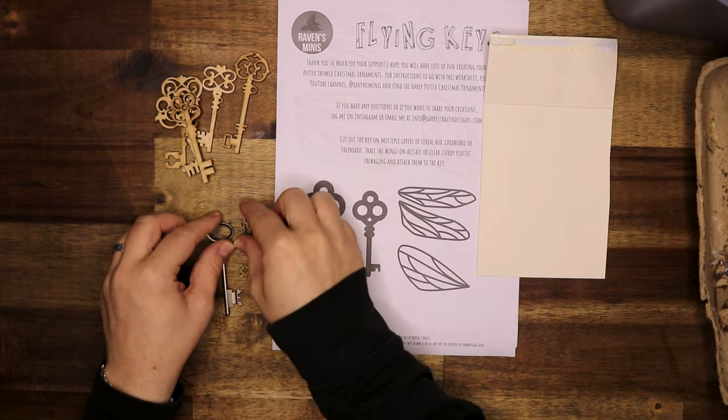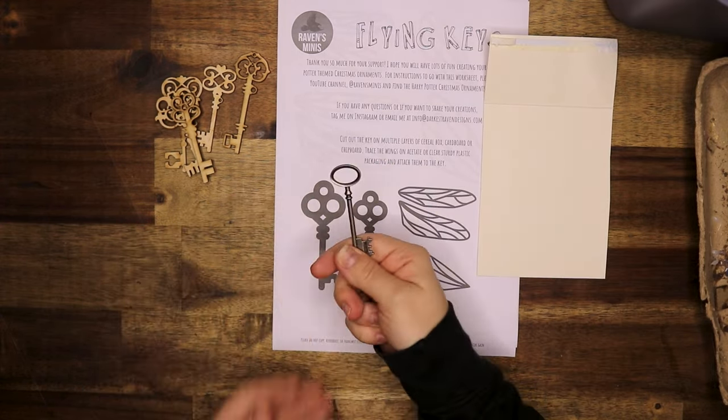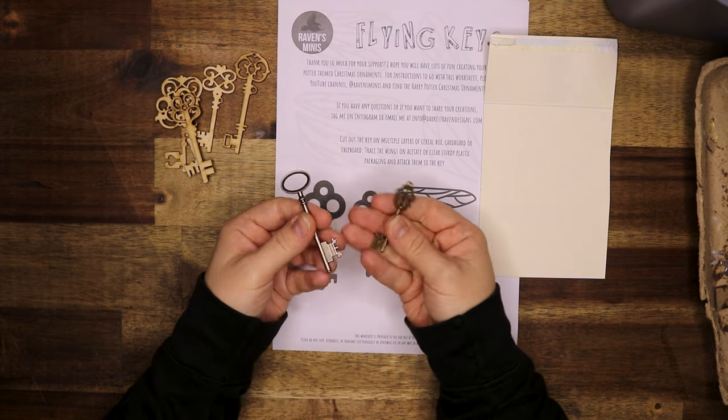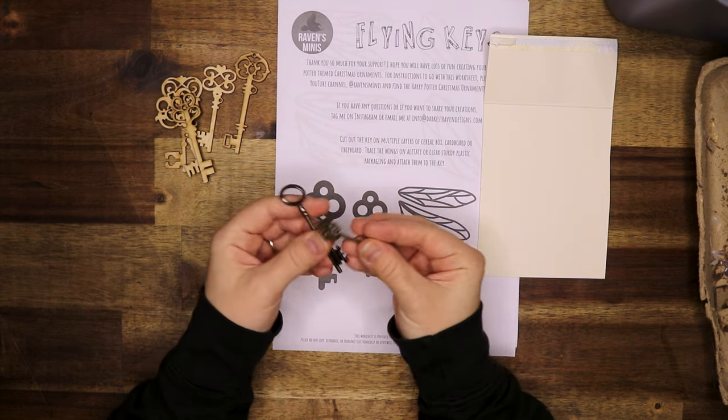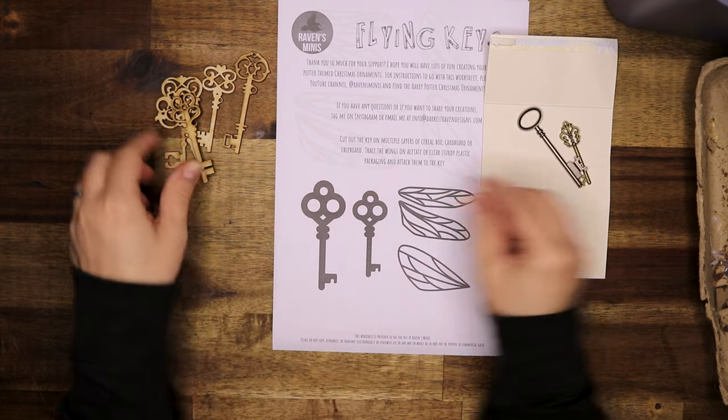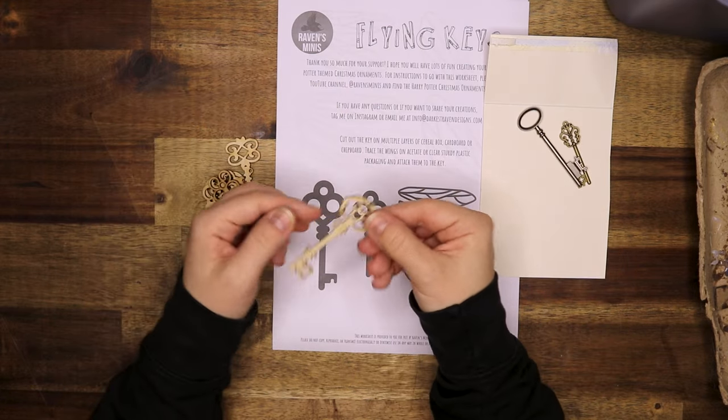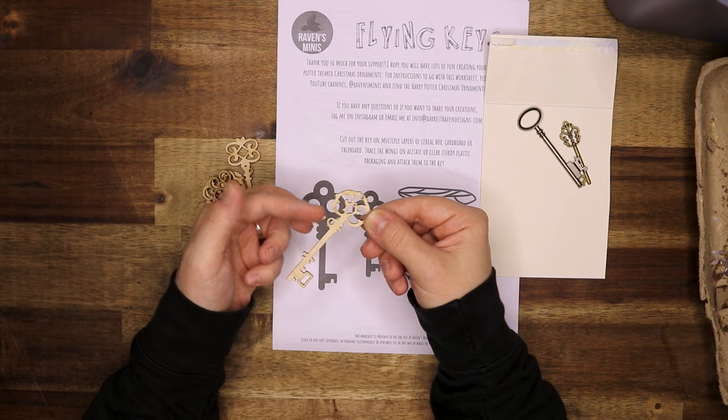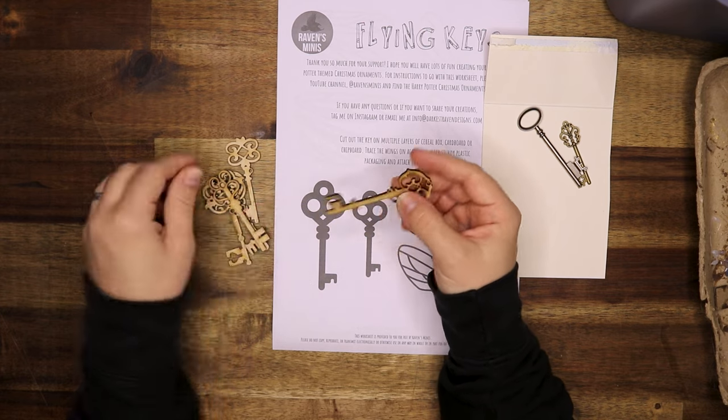You can make this onto cereal box, cardboard, or cardstock—whichever you prefer. You can use real keys or wooden keys. These keys are printed on my laser cutter and you can order these from my website as well if you would like.